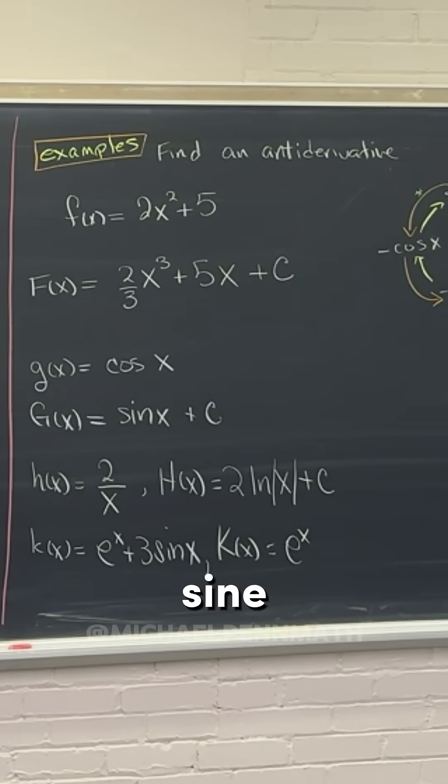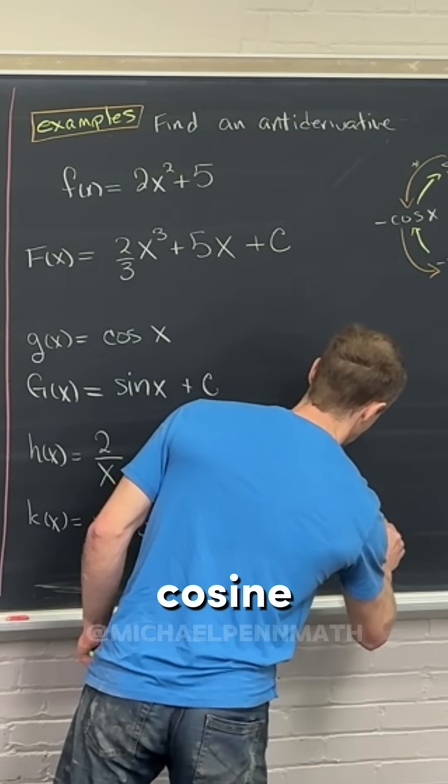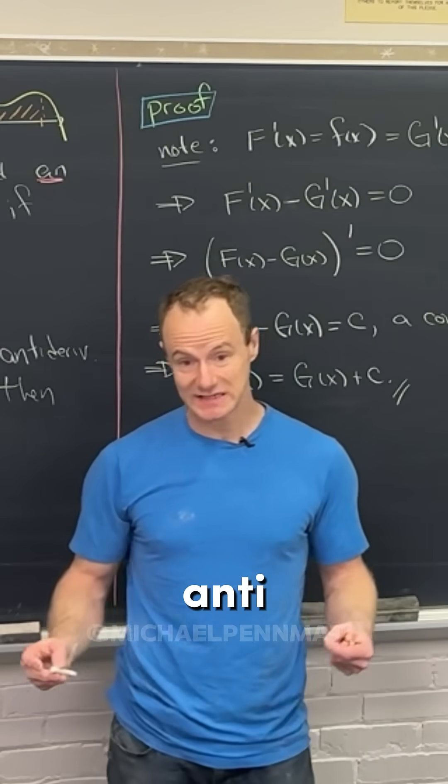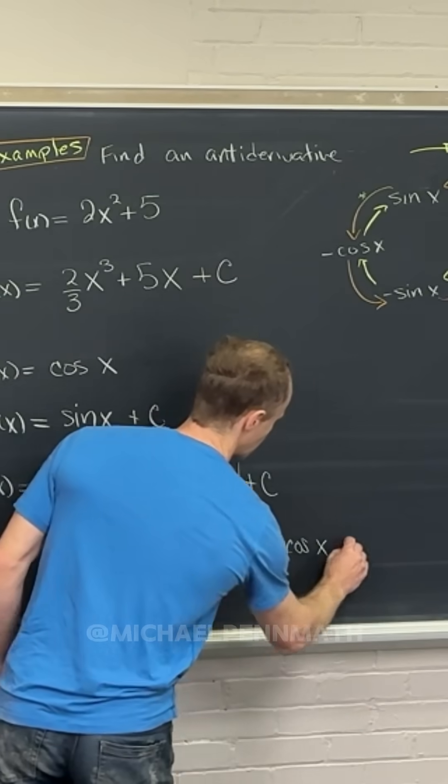And then what about the plus 3 sine thing? Minus 3 times cosine of x. Because we want an antiderivative, not a derivative.